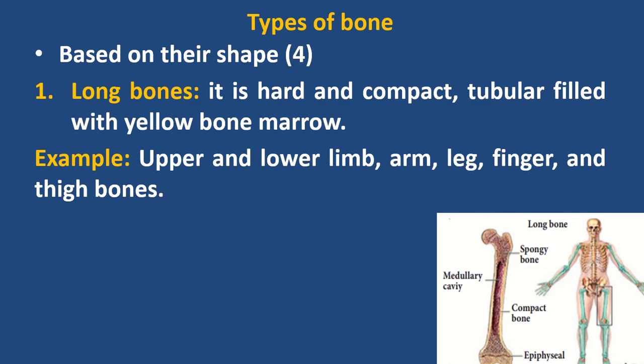Examples of bone types are long bones, short bone, flat bone, and irregular bone. Long bone is hard and compact.